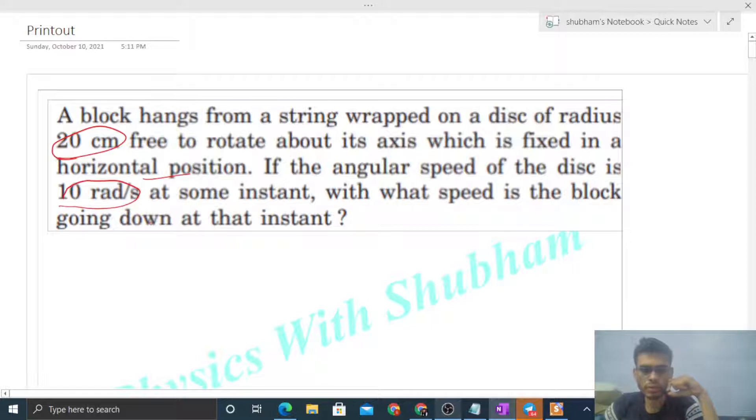So we have a block connected by a string, and this string is wrapped over a disk. The disk is in such a position that it is free to rotate about an axis which is horizontal. This will be the horizontal axis of this disk, and the radius of the disk is given as 20 centimeter, that is 0.2 meter.